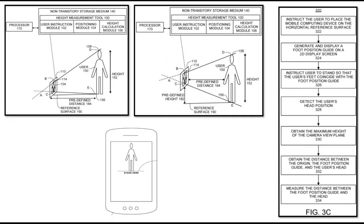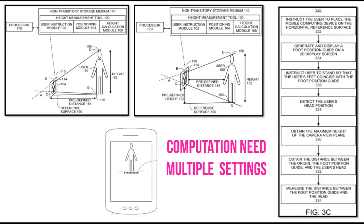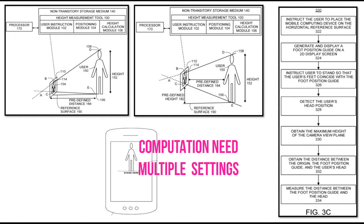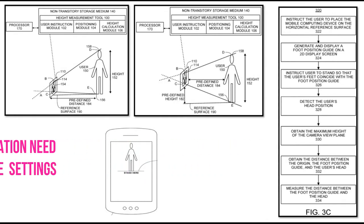There could be multiple inventive steps in one patent itself. Let's try to understand how the height of a person is determined. There are a sequence of steps performed.